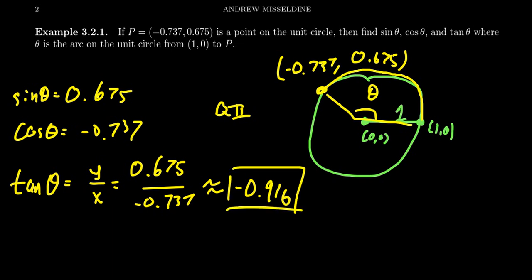And we could do secant and cosecant and cotangent if we wanted to. But I think this example is sufficient to see that as long as we can get sine and cosine, we can do the other trig ratios. And on the unit circle, cosine and sine are exactly the x and y-coordinates.